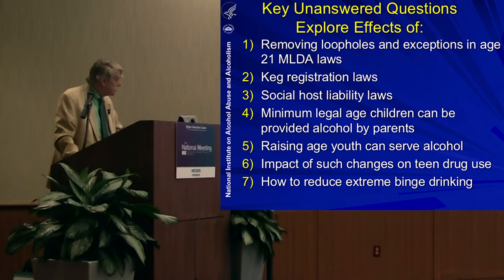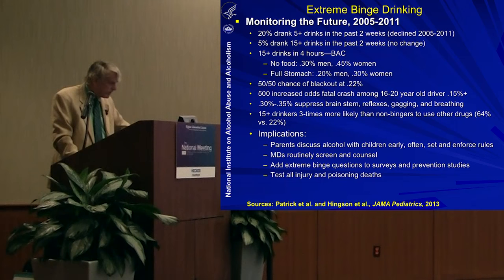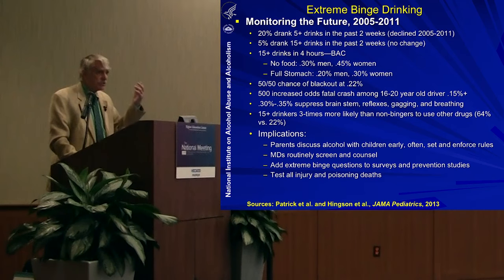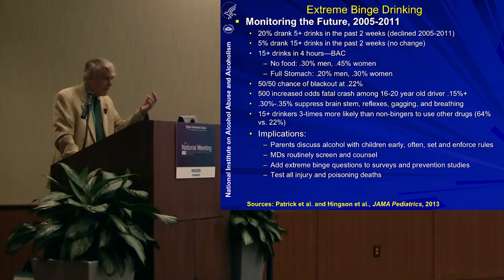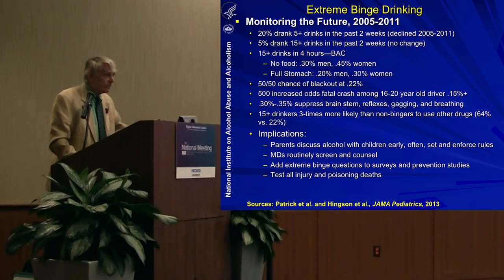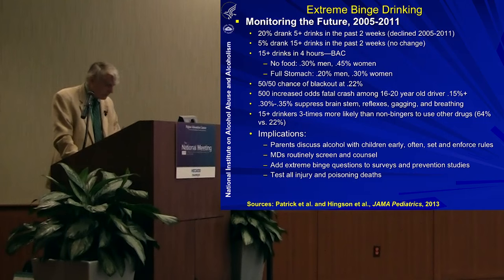Half the people experience blackouts at 0.2, so 15 or more drinks is a very dangerous level of drinking. Unfortunately, over a five-year period, binge drinking at lower levels was declining, but not binge drinking at this very high level. We need to find out the effect of things like social host liability laws, which do appear to reduce drinking and driving fatalities.